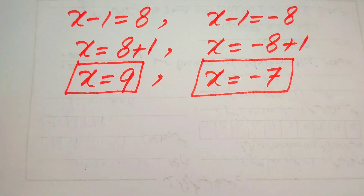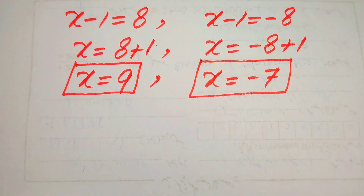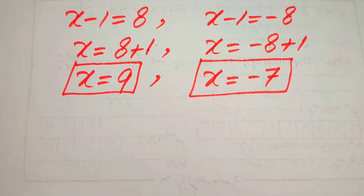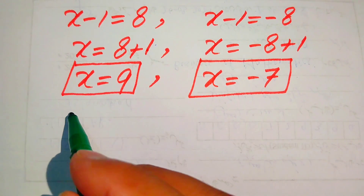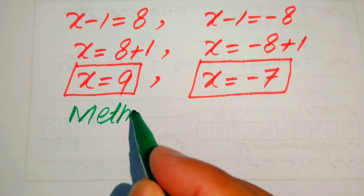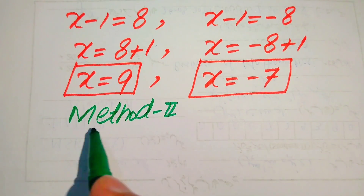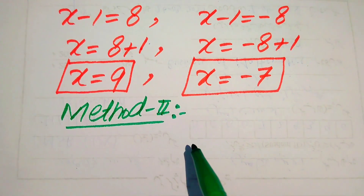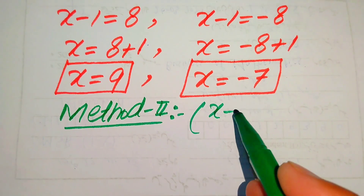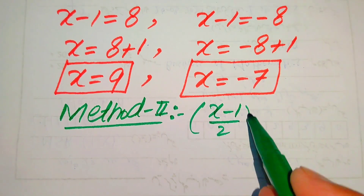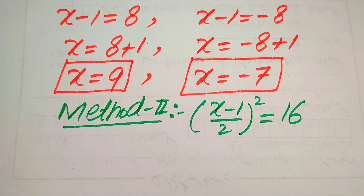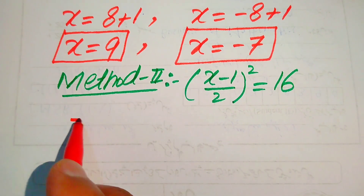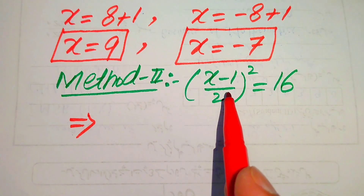In the second case, x minus 1 equals negative 8, so we move minus 1 to the right-hand side, becoming plus 1, giving x equals minus 7. From the first method we get two roots: x equals 9 and x equals minus 7. Now we move towards our second method, where we also find the roots and then check which are solutions or extraneous roots.